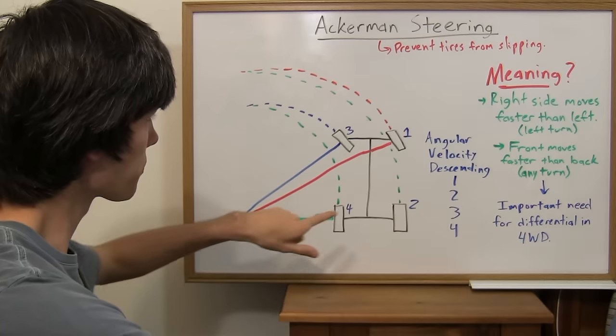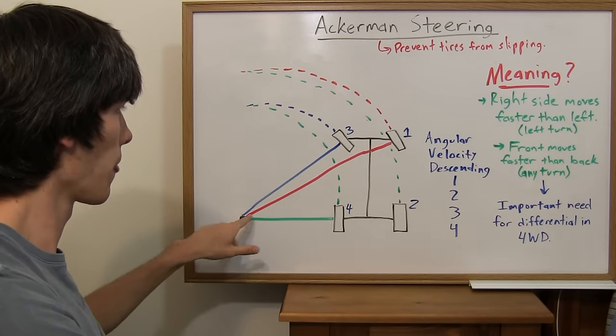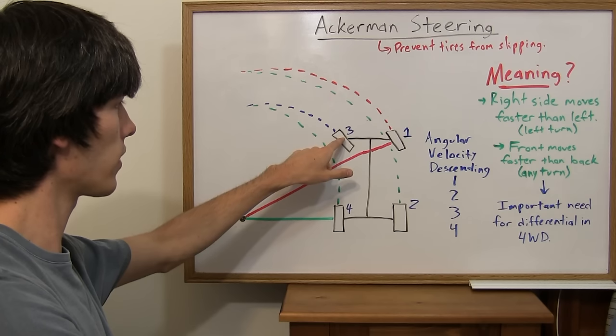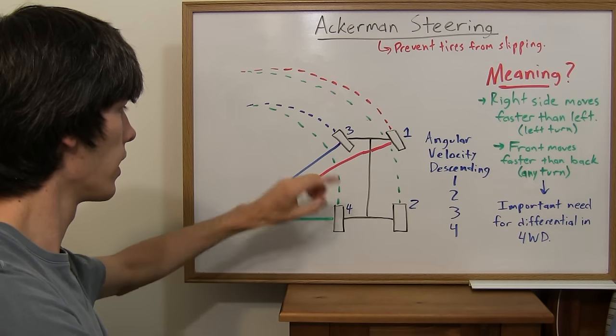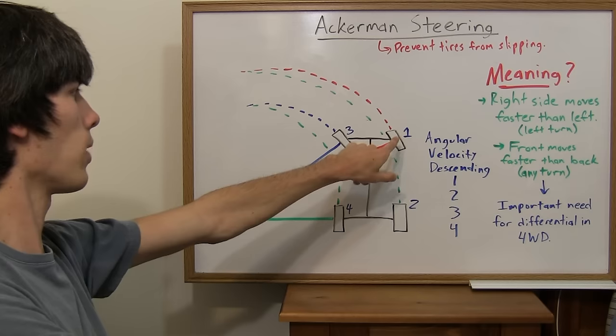How you achieve this is by having a central point at which all your tires are rotating around. You can see that the angle of this tire, this inside left tire, is going to be greater than this outside right tire.